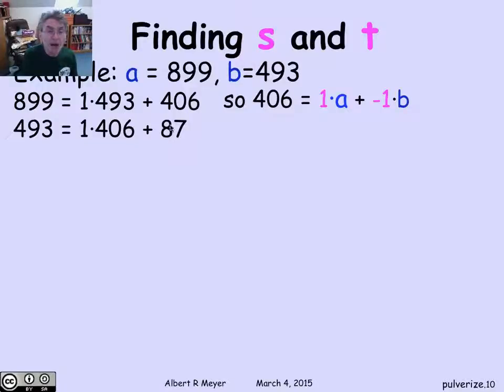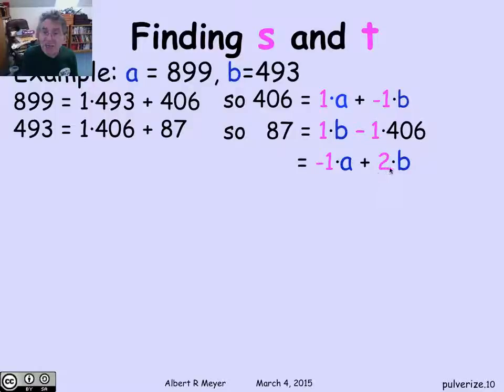Now that I've got 406 and 493, I'm supposed to take the remainder of 493 divided by 406. That's 87. In fact, 493 has a quotient of 1 times 406 plus 87. So 87 is 493 minus 406. Remember, 493 is b, so 87 is 1 times b minus 1 times 406. But 406, I know how to express it as a linear combination of a and b. So let's replace the 406 by 1a plus minus 1b, and I wind up with minus 1a plus 2b.